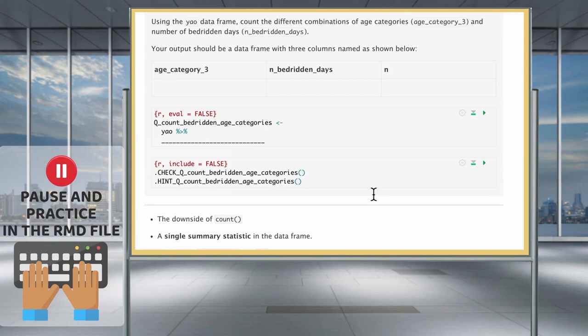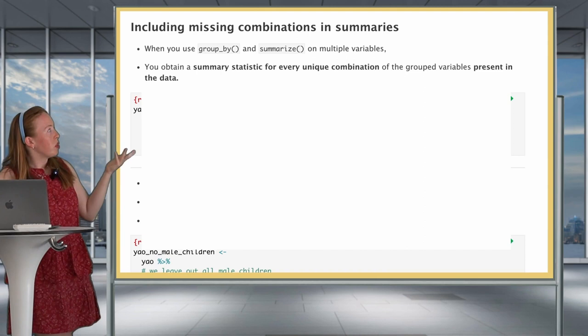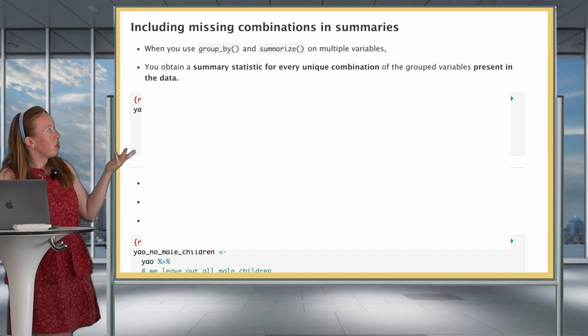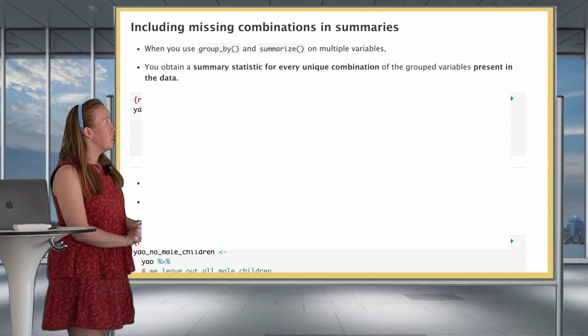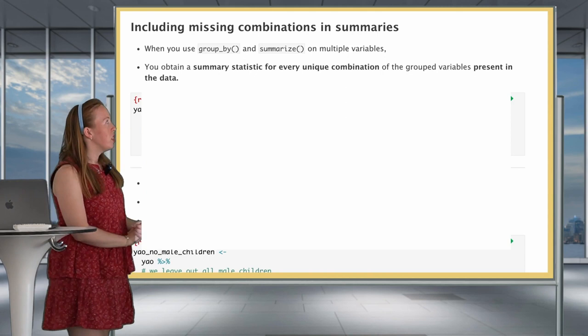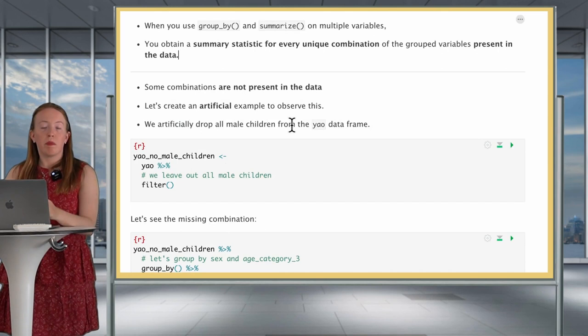Now we move to a very important aspect of group_by: what do you do if you want to include missing combinations in your summaries? When you use group_by and summarize on multiple variables, it creates summary statistics only for unique combinations actually present in your data. If a combination doesn't exist — for example, if no men have a certain occupation — that combination won't appear. Let's see an example by creating an artificial dataset where there are no male children.